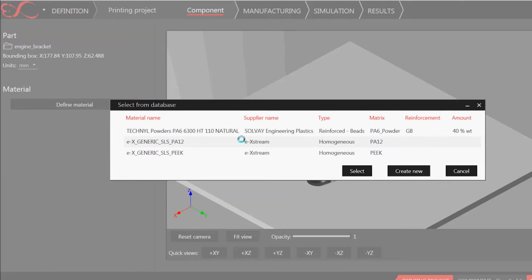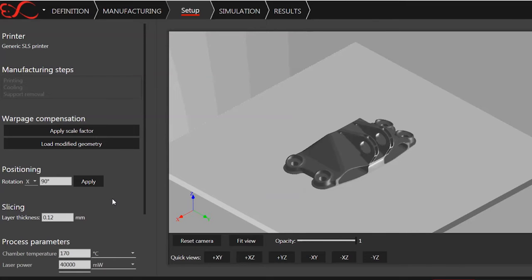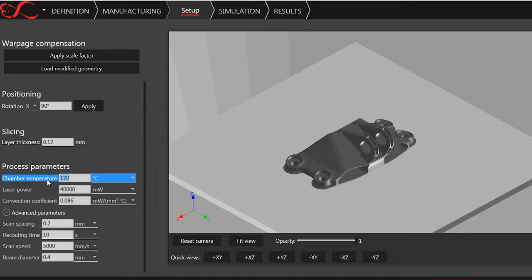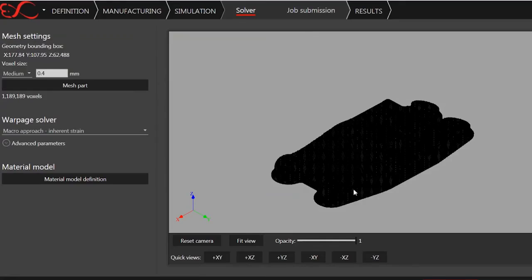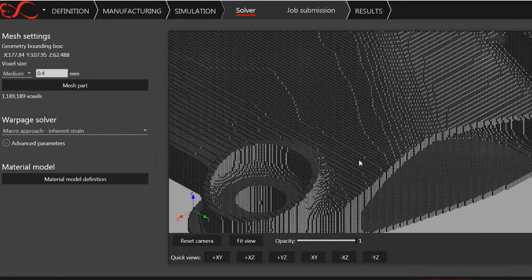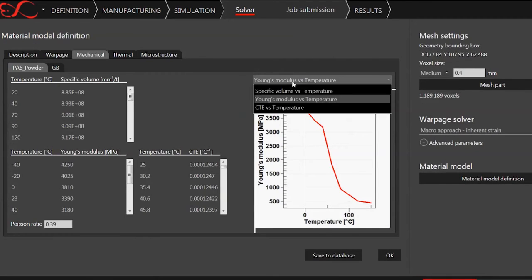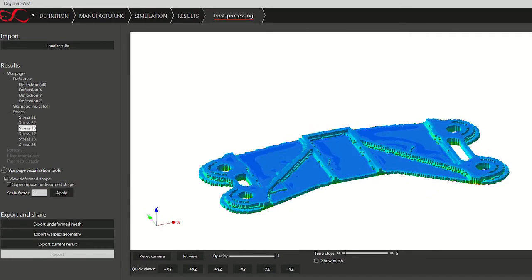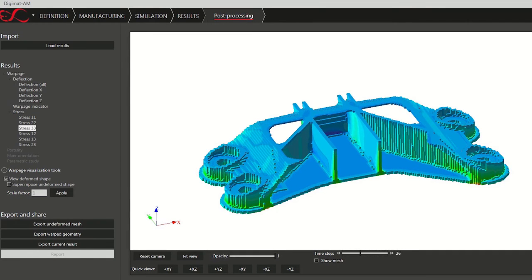Things like part orientation, toolpath, and supports. The general workflow of Digimat AM is based on the physical printing workflow and relies on a smooth, efficient, and user-friendly GUI. Once the FEA simulation is completed, the layer-by-layer progressive build of the part is reproduced.